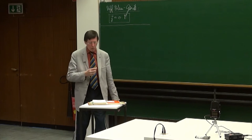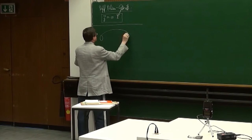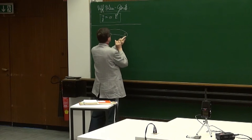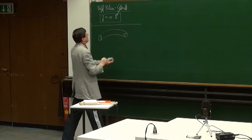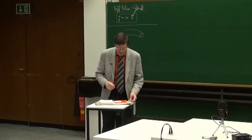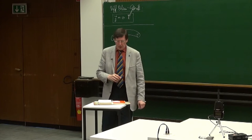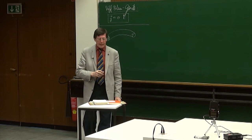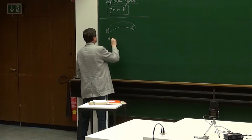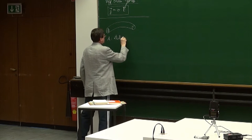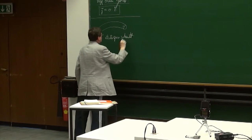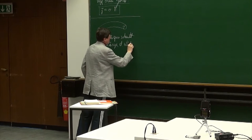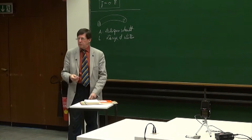Wir betrachten einen zylindrischen und homogenen Leiter. Wenn ich sage zylindrisch, denke ich an einen geradlinigen Zylinder, der aber durchaus auch gekrümmt sein kann. Der Leiter hat eine Querschnittsfläche A und eine Länge L. Das ist also zum Beispiel so ein Kupferdraht, den man heute in der Praxis verwendet.